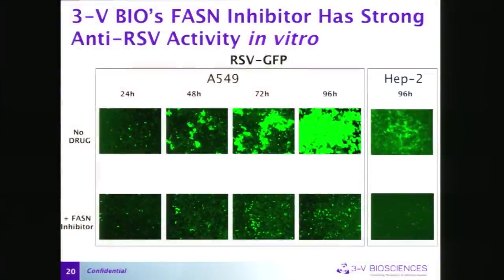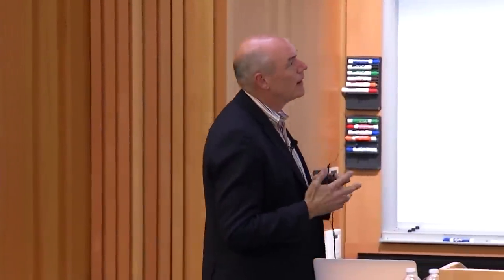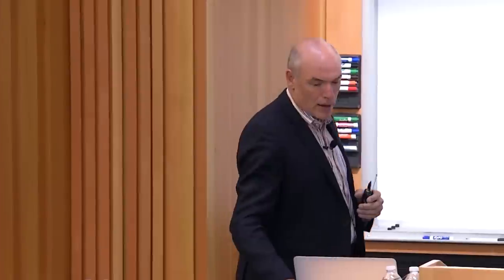To test our broad-spectrum premise, through our friends at MedImmune we obtained RSV with a GFP reporter and asked whether FASN inhibition inhibits RSV. The answer is yes. In A549 cells, RSV-GFP without drug shows bright green fluorescence spreading across the monolayer over 24 to 96 hours. With our drug, by 96 hours there are some green cells from the input inoculum but no massive viral spread. In HEP2 cells — a very productive RSV substrate — without drug there is abundant green fluorescence; with drug, nothing.